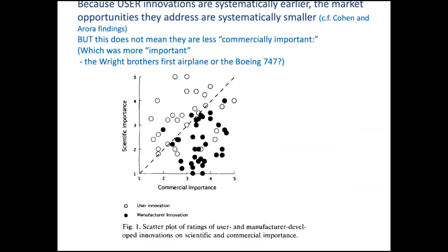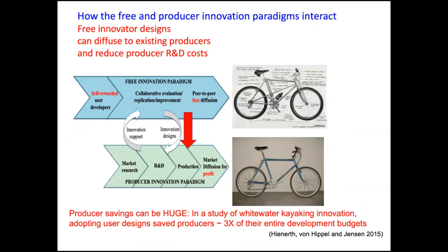Now let me jump to how this matters for you. On the top arrow we see innovators creating things, and that top arrow begins before the bottom arrow. This is because individual users only have to care about their own needs - they don't have to care about whether there's a market. Since a market becomes visible only after there's something that people are using, the evidence of what individual users need is available before it's available to producers.